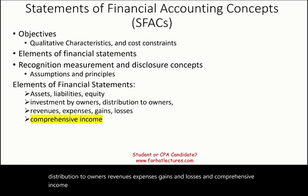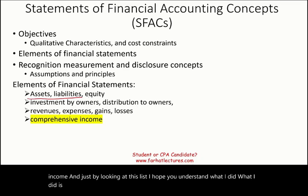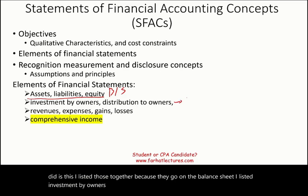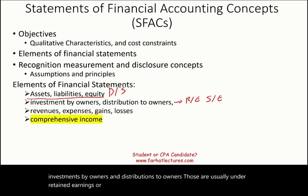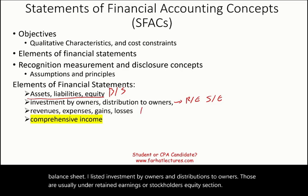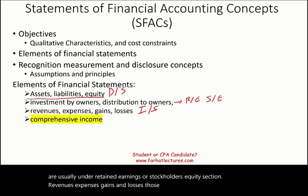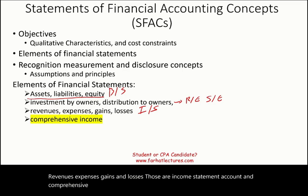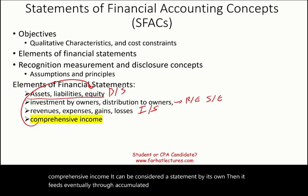By looking at this list, assets, liabilities, and equity go on the balance sheet. Investment by owners and distribution to owners are usually on the retained earnings or stockholders' equity section. Revenues, expenses, gains, and losses are income statement accounts. Comprehensive income can be considered a statement by its own, and it feeds eventually through accumulated other comprehensive income into the equity section of the balance sheet.